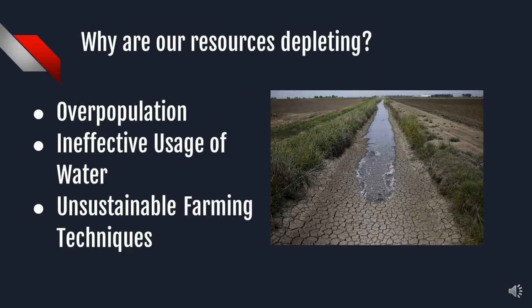The three main reasons why our resources are depleting are overpopulation, the ineffective uses of water, and unsustainable farming techniques that aren't nature friendly.